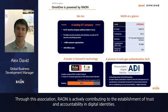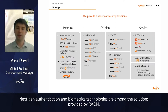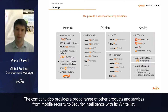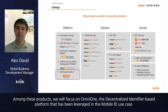NextGen authentication technology and biometric authentication technologies are among the solutions provided by RAN. The company also provides a broad range of other products and services, from mobile security to security intelligence. Among these products, we will focus on OmniOne, the decentralized identifier-based platform that has been leveraged in the mobile ID use case.